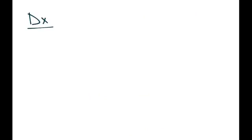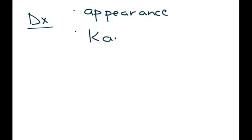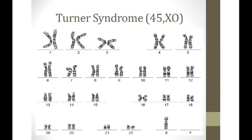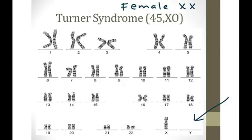Now let's get into the diagnosis. Of course the appearance of the patient and the physical exam findings previously mentioned. A karyotype will show that classic 45XO pattern. As you can see in this karyotype, all the chromosomes are normal except it is missing the X chromosome. This is of course a girl, so normally you would expect her to have two X chromosomes, and one is missing — therefore she has XO.